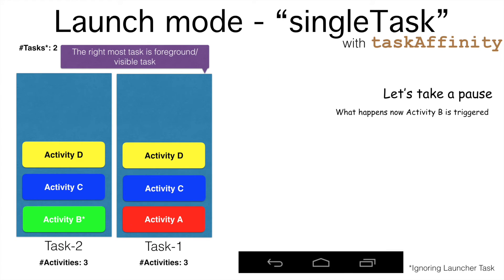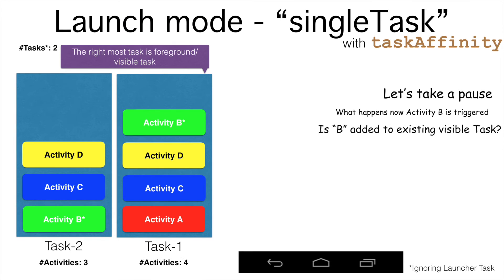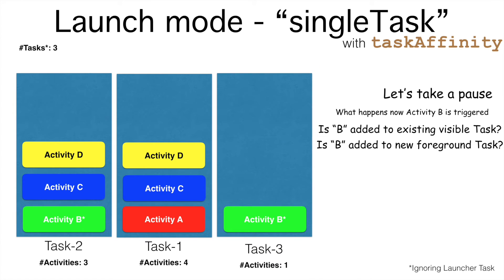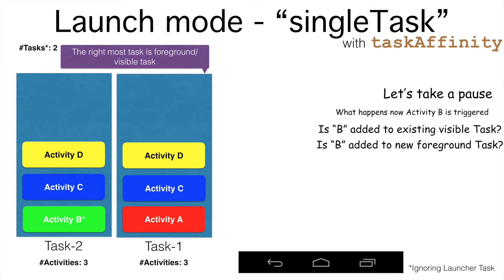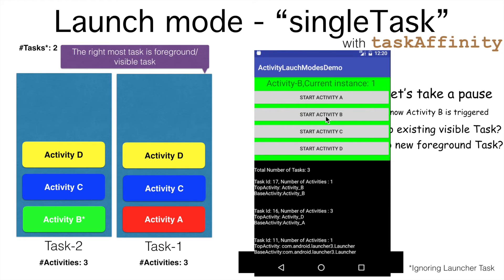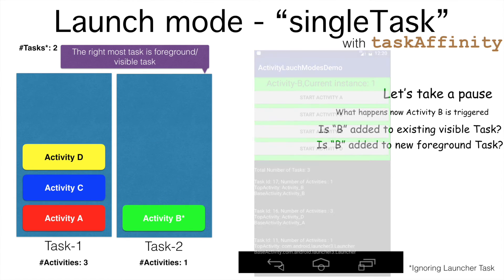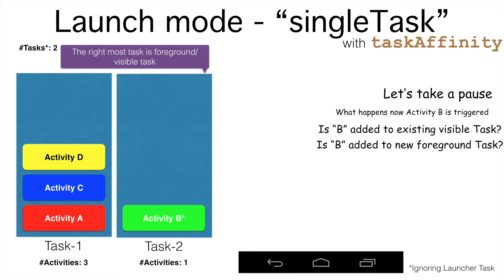Let us pause and try to understand what happens if Activity B is triggered from Activity D. You may think that Activity B would be launched in the same task, or that Activity B will be launched in a separate task. The name 'single task' should give you some hint as to what should actually happen. So let me click and see what happens. Since it is a single task and Activity B already exists in Task 2, Activity D and Activity C would be popped, and then Activity B — which is part of Task 2 — would be brought back to the foreground, and Task 1 will go to the background. That is the behavior of a single task with task affinity.